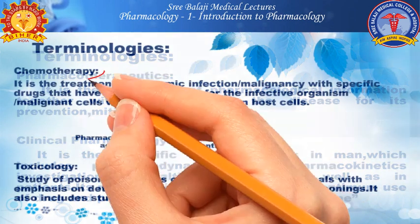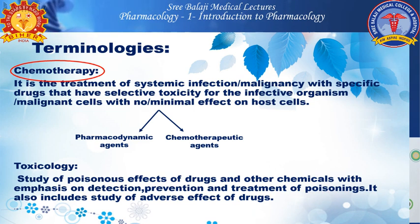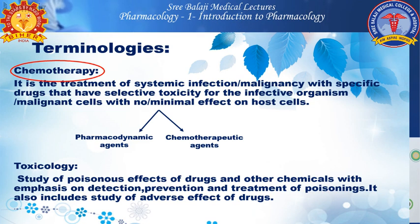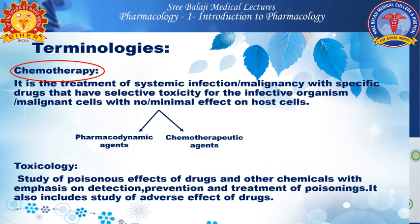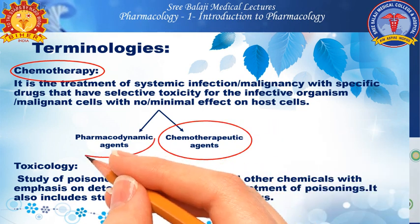Next is chemotherapy. By the word chemotherapy, what comes to mind is cancer treatment, but it is not only cancer treatment — antibiotics are also chemotherapy. It is the treatment of systemic infections or malignancies with specific drugs that have selective toxicity to the infective organisms or malignant cells, with no or minimal effect on host cells. In chemotherapy we target the organism or malignant cells with minimal effect on the host. It is divided into chemotherapeutic agents and pharmacodynamic agents.